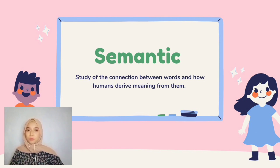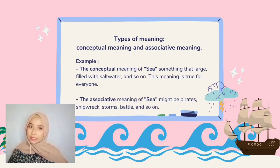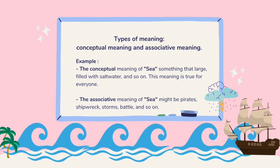Semantic is the study of the connection between words and how humans deliver meaning. The purpose of semantics is to propose the exact meaning of words or phrases and remove confusion. Semantics proposes that a word has many possible meanings. Types of meaning include conceptual and associative meaning. Associative meaning varies from person to person, while conceptual meaning is shared. For example, the conceptual meaning of 'sea' is something large and filled with salt water — true for everyone. While the associative meaning of 'sea' might be pirate, shipwreck, storm, battle, and so on.